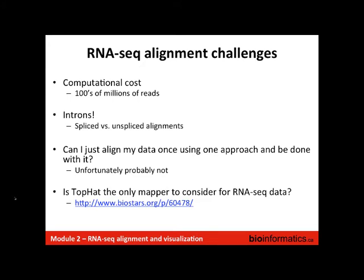A common question is: can I just align my data once using one approach and be done with it? Unfortunately, the answer is probably not. Depending on what you're trying to accomplish — whether you're looking at small RNAs versus regular RNAs, or looking for fusions versus gene-level expression or splicing — you may need to run alignments with different software or different parameters. There are lots of details about that in the literature and in the BioStars forum.